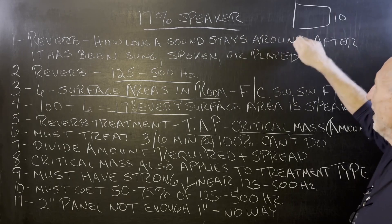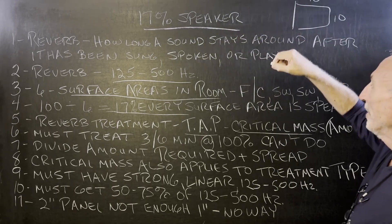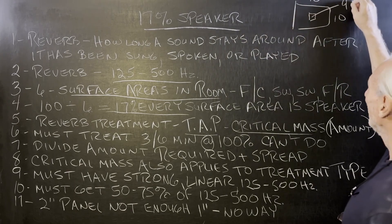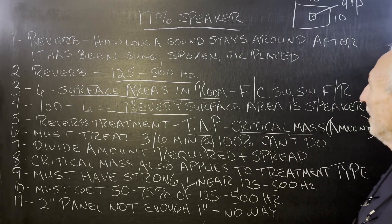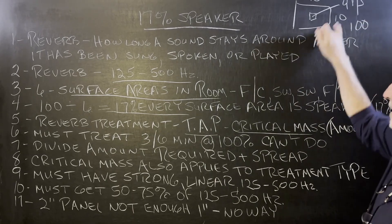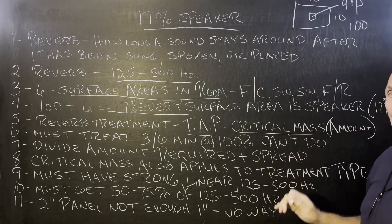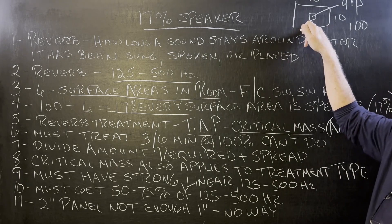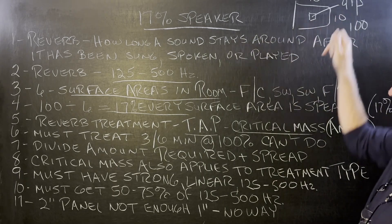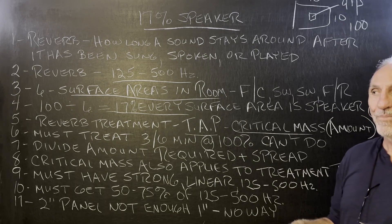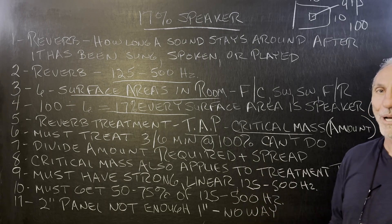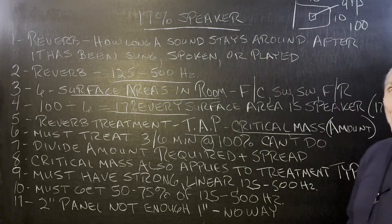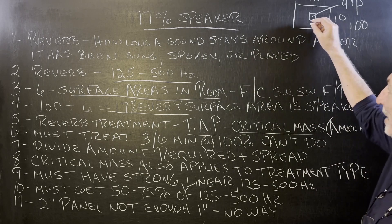It's 10 by 10 — 100 square feet. And we put a little panel there that's four square feet. Without knowing the math and physics behind it, just using common sense: four square feet on 100 square feet — even if that thing is a huge sponge at 125 to 500, even 100 percent absorption — it's still not going to help the problem because we don't have enough surface area coverage.